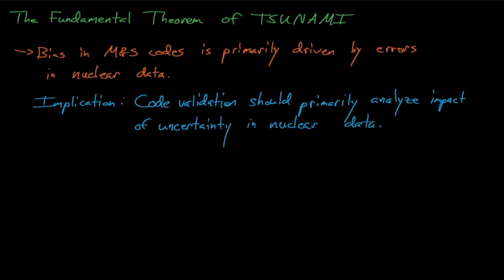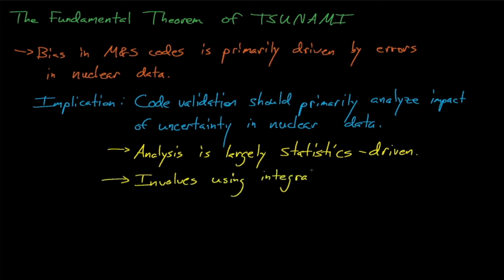Understanding the computational bias in Monte Carlo codes is primarily a statistics-driven process, and it requires estimating the upper subcritical limit, the computational bias, and the bias uncertainty by comparing Monte Carlo simulation results with the results of integral benchmark experiments.